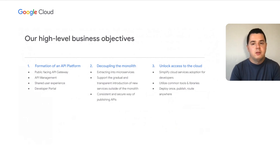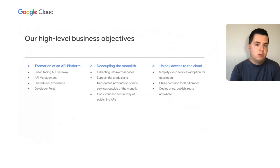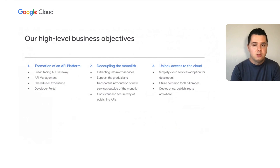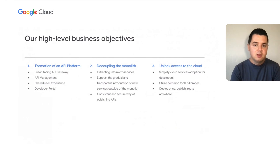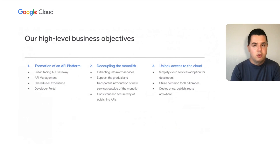When we were posed with the challenge of going hybrid cloud and API-first, we defined our high-level business objectives. First, the formation of an API platform with an API gateway at its core — used for API management and offering a shared user experience for developers but also for external consumers through a consistent developer portal. This also meant that APIs inside the platform shouldn't pose an additional threat to security, underlying systems, or data. Secondly, when decoupling and decomposing the monolith into microservices, we want to support our developers and allow gradual and transparent adoption of new services.